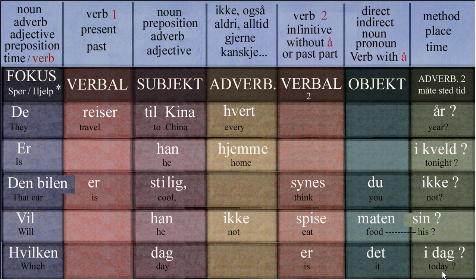"Hvilken dag er det i dag?" — Which day is it today? You can see "hvilken" changes with the noun. In this case, "en dag" turns "hvilken" into "hvilken" — it could have been "hvilket" or "hvilka" if it was plural. If you don't understand feminine, masculine, neutral, and plural, don't even worry about it. Just start using the words and fine-tune them later on. If you wait to get everything perfect, it could take 20 years before you utter your first Norwegian.